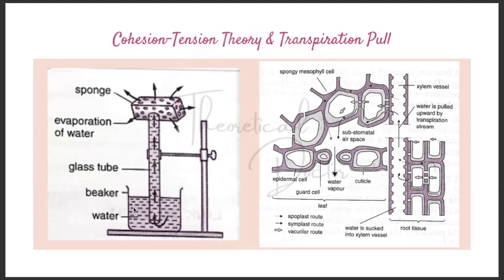A helpful way to remember cohesion tension theory is that transpiration (evaporation) causes water to be pulled up. In root pressure theory, 'pressure' reminds you that water is pushed into the xylem. The picture on the right is a summary: water is absorbed from the roots and transported through the apoplast, symplast, and vacuolar pathways; as evaporation occurs, water is pulled up through the xylem vessels, as water molecules are linked by hydrogen bonds.